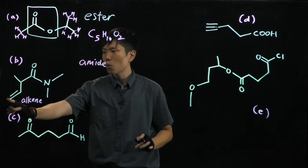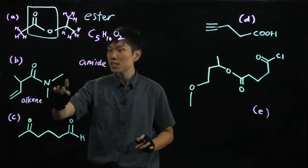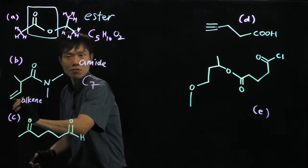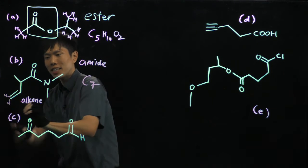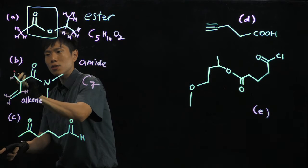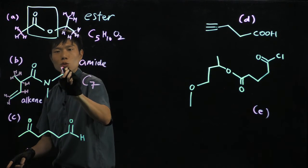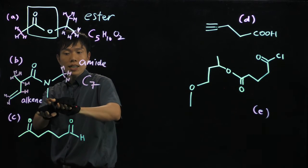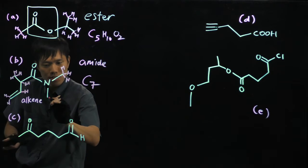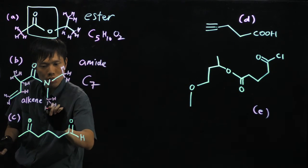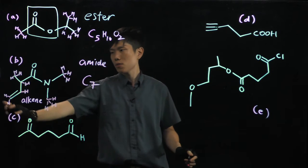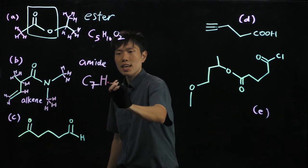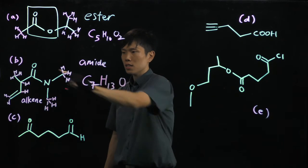For the formula, we count: seven carbons, C7. For hydrogen — two lines emerging from this carbon, so two are not shown. Do not be fooled — this end is not hydrogen, I end off with a carbon always, so it's a carbon with three hydrogens. Totaling up: 2, 4, 6, 8, 10, 12, 13. So the molecular formula is C7H13ON.